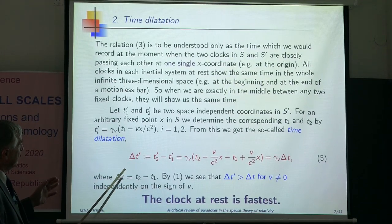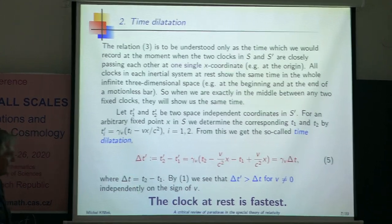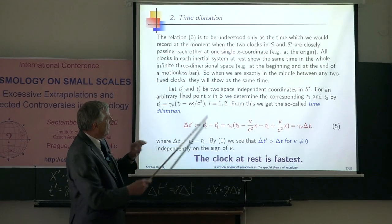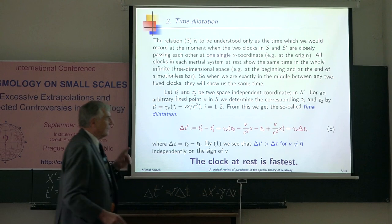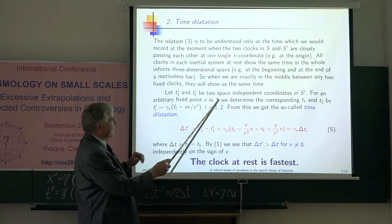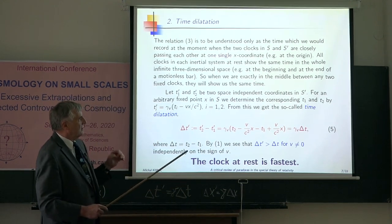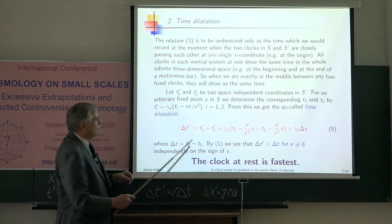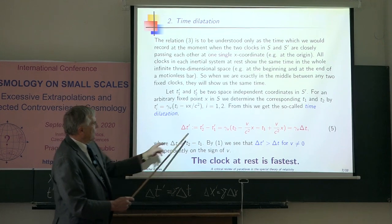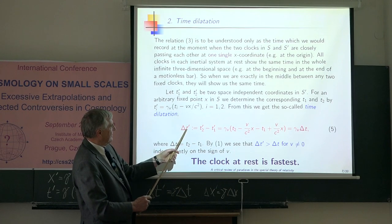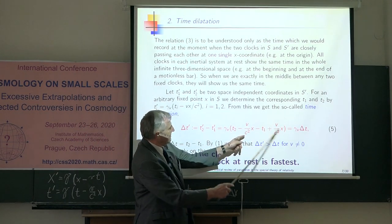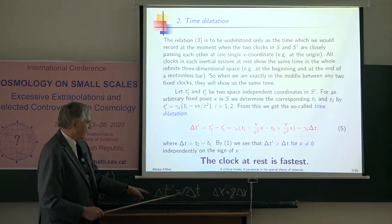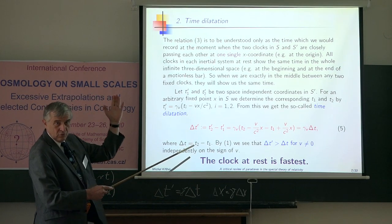Now I will very briefly show you how to derive this formula for time dilation. If you take t1 prime and t2 prime, and these will be two space independent coordinates in S prime, then for an arbitrary fixed point x in system S, we determine the corresponding t1 and t2 such that this formula holds for i equal to 1 and 2. This x is fixed. Now you only subtract these two numbers and we define delta t prime in this way. You see that these two terms cancel and you end up with that. You get very simple formula for time dilation.